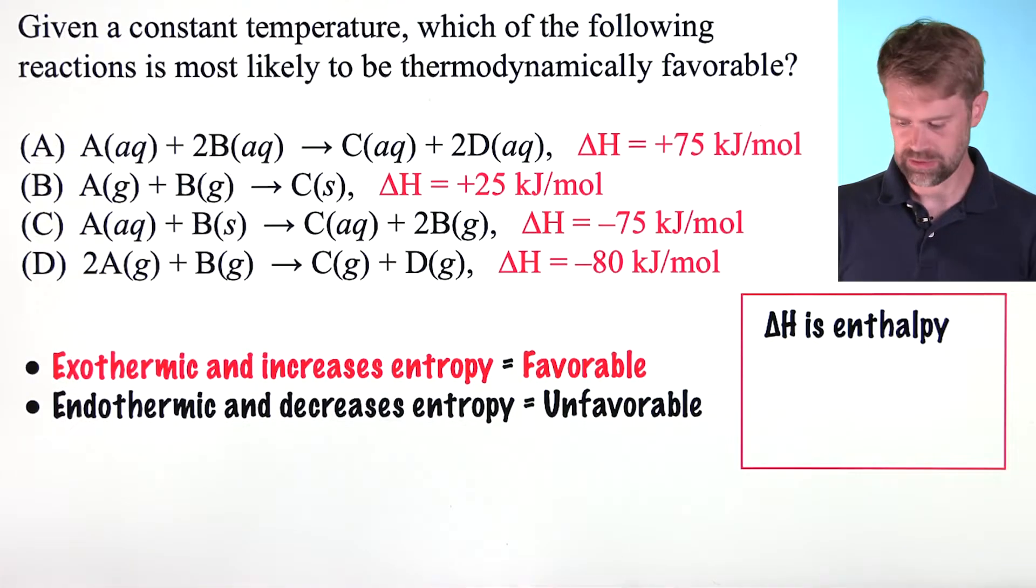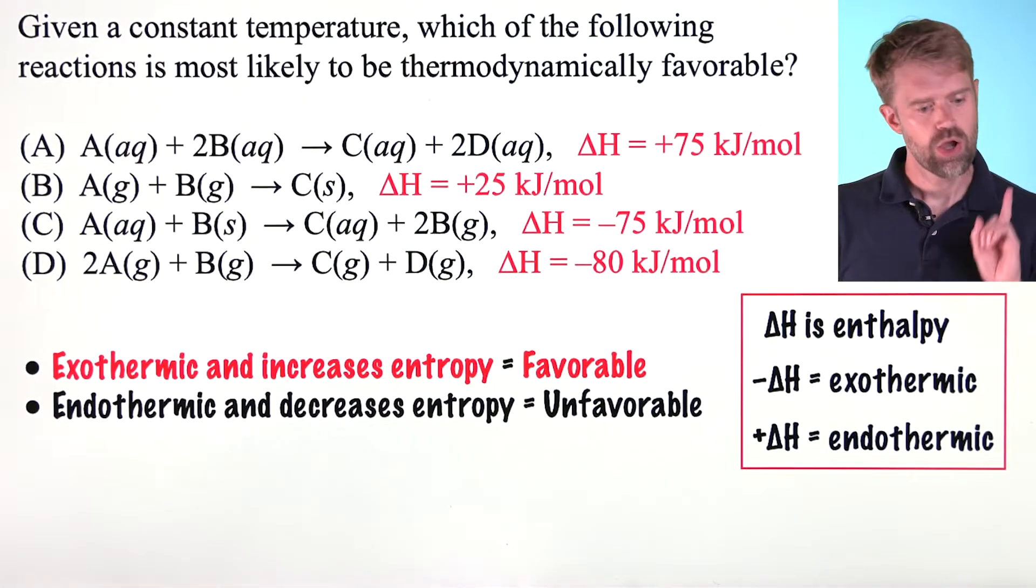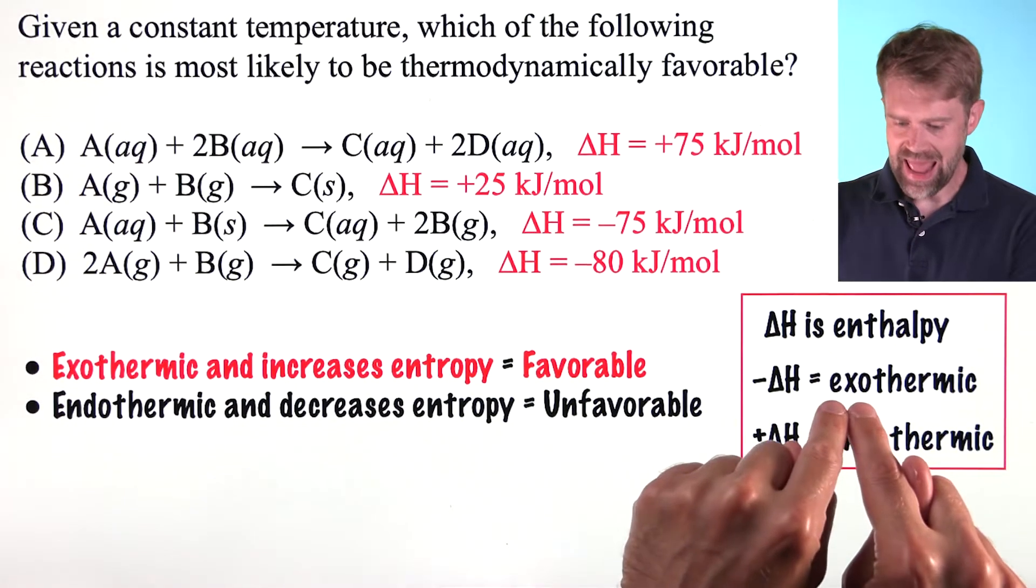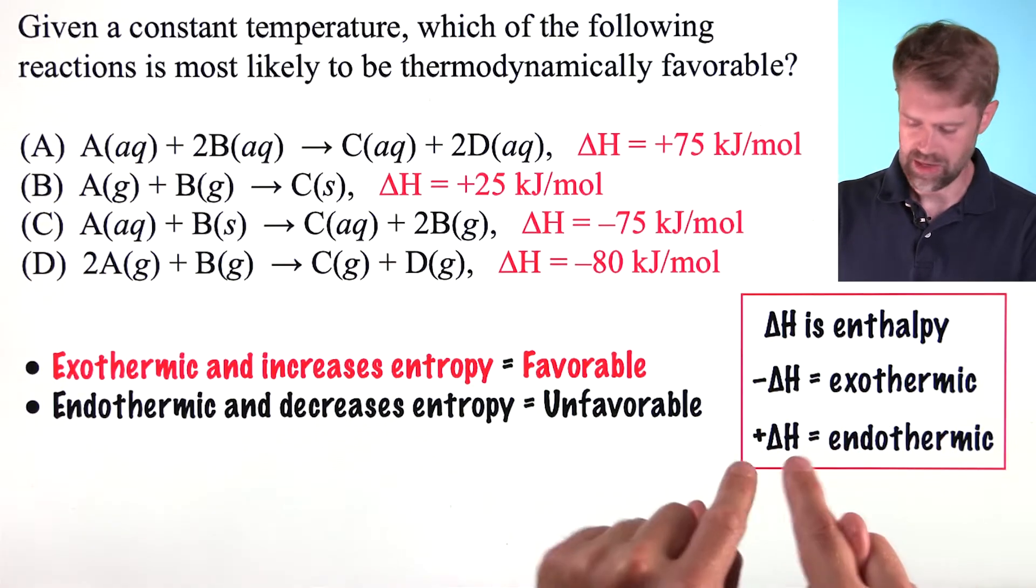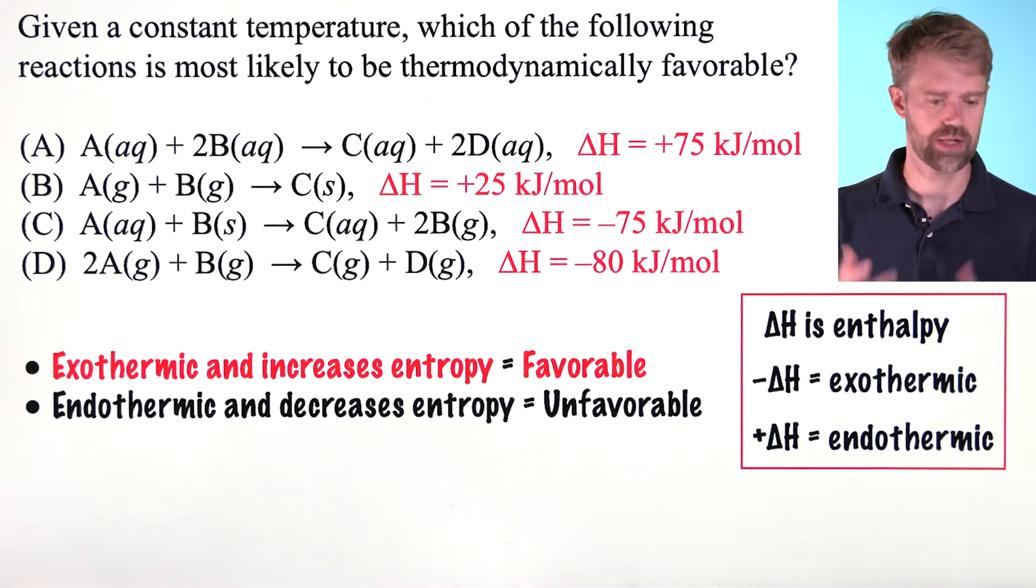So, we'll begin by looking at delta H, that's the enthalpy. Just remember that a negative delta H indicates an exothermic reaction and a positive delta H indicates an endothermic reaction.